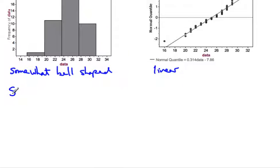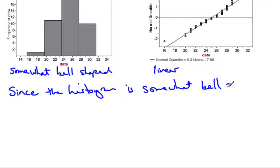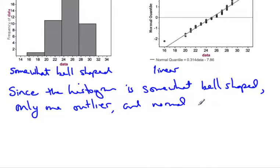The final conclusion is that since the histogram is somewhat bell-shaped, there's only one outlier, and the normal probability plot is linear, the data set is probably from a population that's normally distributed.